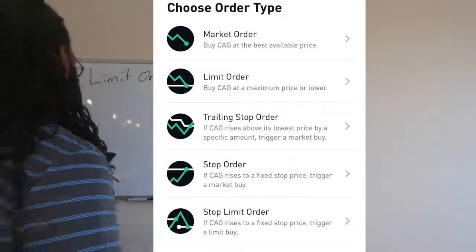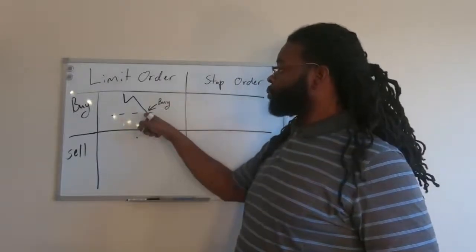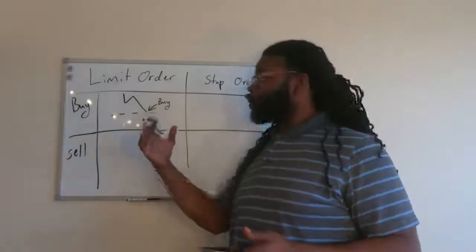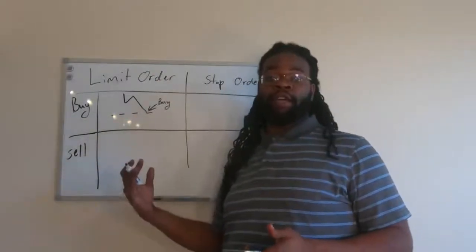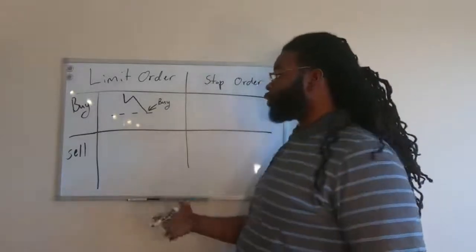We're going to look at a Limit Order Buy first. When you're placing a Limit Order Buy, you're choosing a price target that once a stock drops to that price, you're automatically going to buy that share, whether you're there to actively do it or not. Your account is going to automatically do it for you if the money is there.